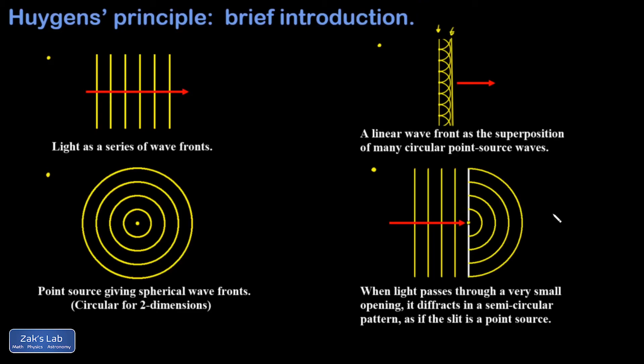In the next video, we'll use Huygens' Principle to understand what happens when light arrives at a pair of small slits in a screen.